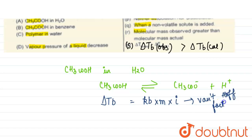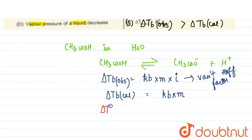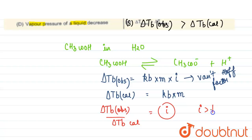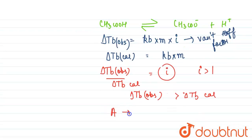Delta tb calculated equals Kb into molality. So delta tb observed upon delta tb calculated equals i, and i for this dissociation will be greater than one. Therefore, A is matched with S: delta tb observed is greater than delta tb calculated. This is our first answer.